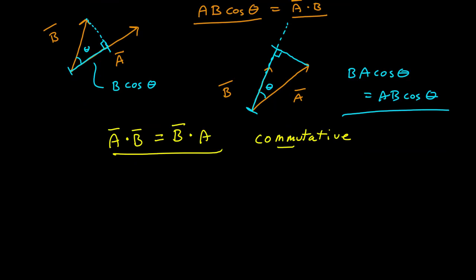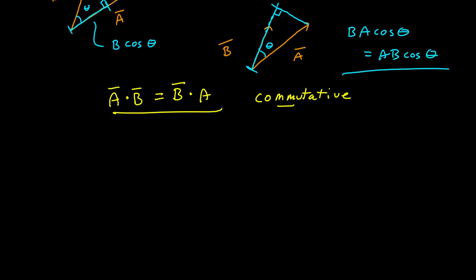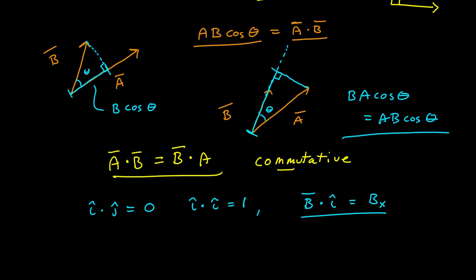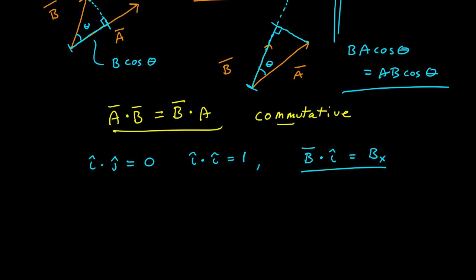Finally, let's take a look at unit vectors. Unit vectors are perpendicular to each other, so the dot product of any two different Cartesian unit vectors is equal to zero. And i dot itself is equal to one — so any Cartesian unit vector dotted with itself is one. Any vector dotted with a Cartesian unit vector gives you the component along that axis. The magnitude of the unit vector is one, and the projection of b on i-hat is the x component.